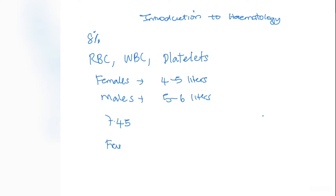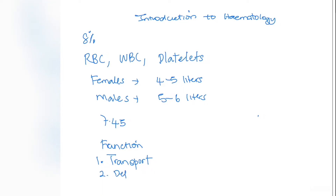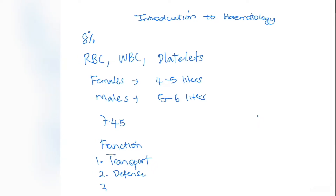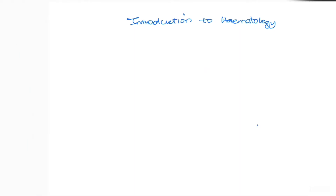The functions of the blood include transportation — nutrients, oxygen, and other substances are transported in the blood. Secondly, it is needed for defense, mainly through white blood cells to fight off infections. It also plays a role in hemostasis — clotting after an injury — and in homeostasis, ensuring the body's environment is maintained at an ideal temperature.